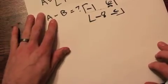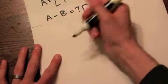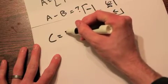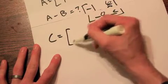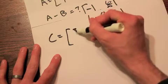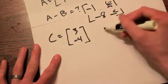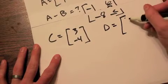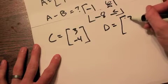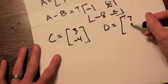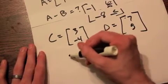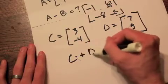Now, let's look at another set of matrices. Let's look at matrix C. And it is going to be a two by one matrix. And it is three, negative four. And matrix D is also going to be a two by one matrix. And it is seven and five.